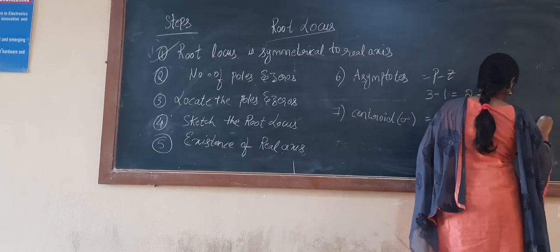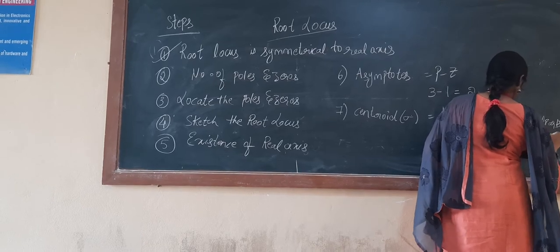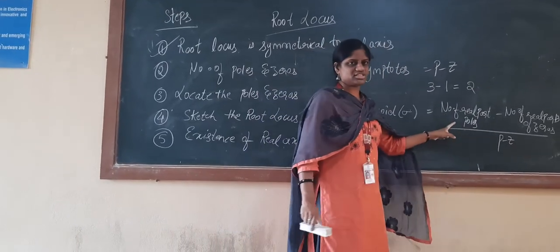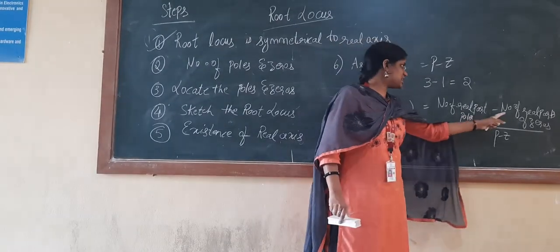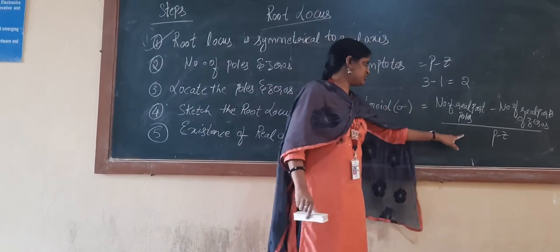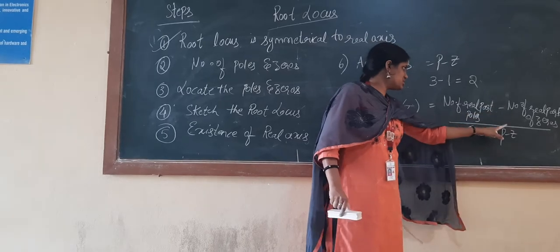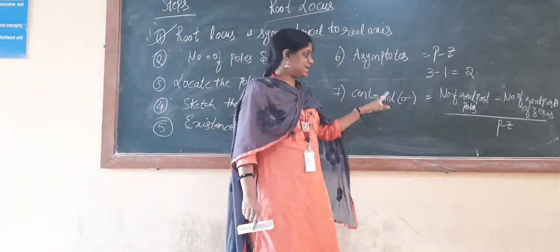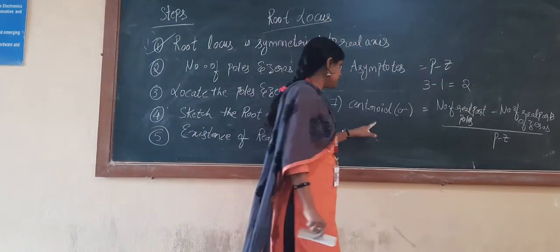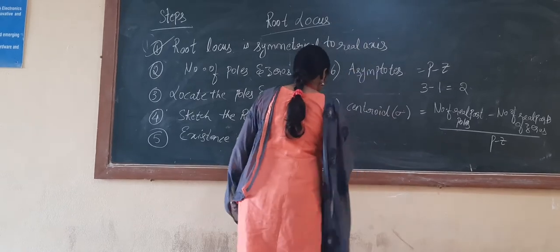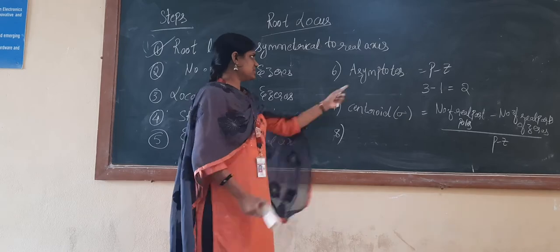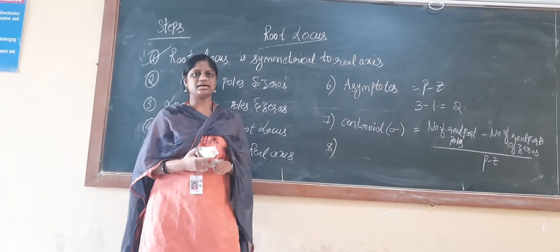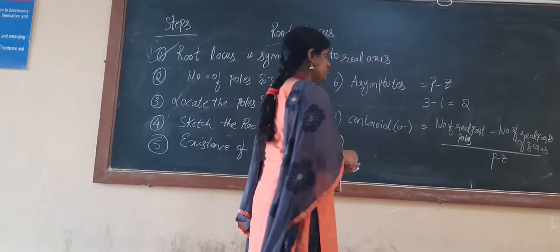You calculate the centroid by taking the sum of real parts of poles minus the sum of real parts of zeros, divided by P minus Z. Whatever value you get after simplifying gives you the centroid location on the real axis. From that point, you start drawing the asymptotes. So you need to find the centroid first, and then you also need to find the angle of the asymptote — that is, to which angle you need to draw the asymptote.